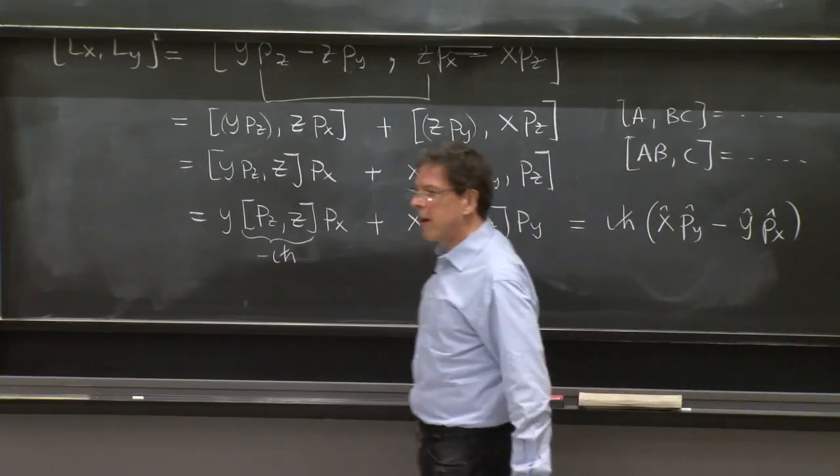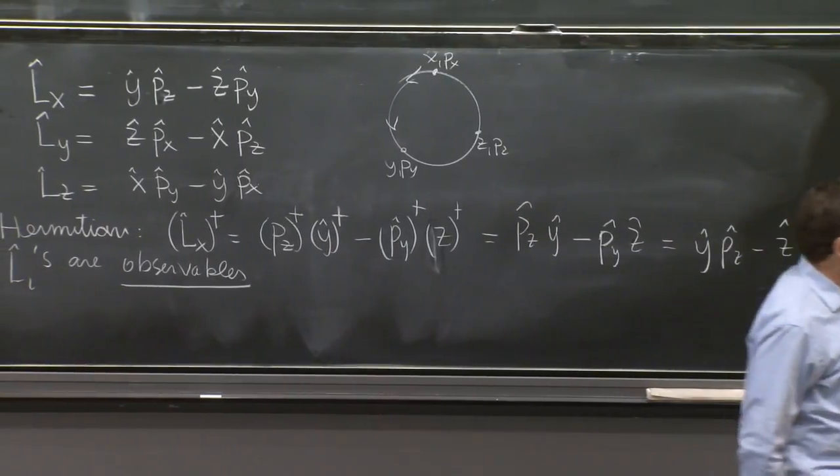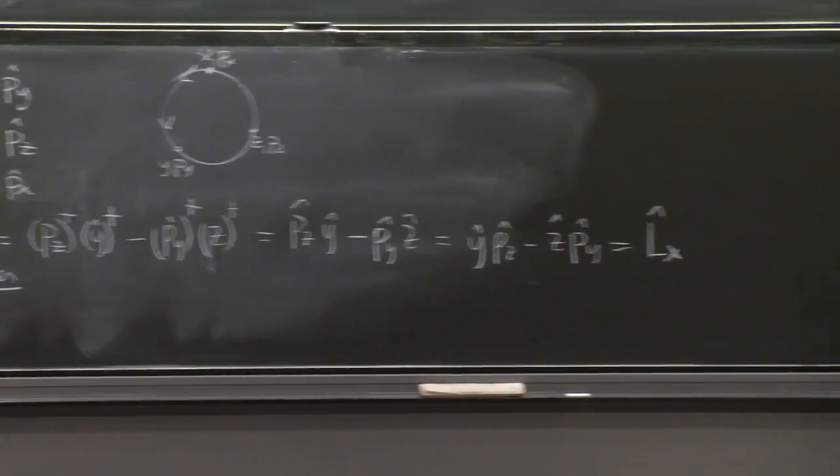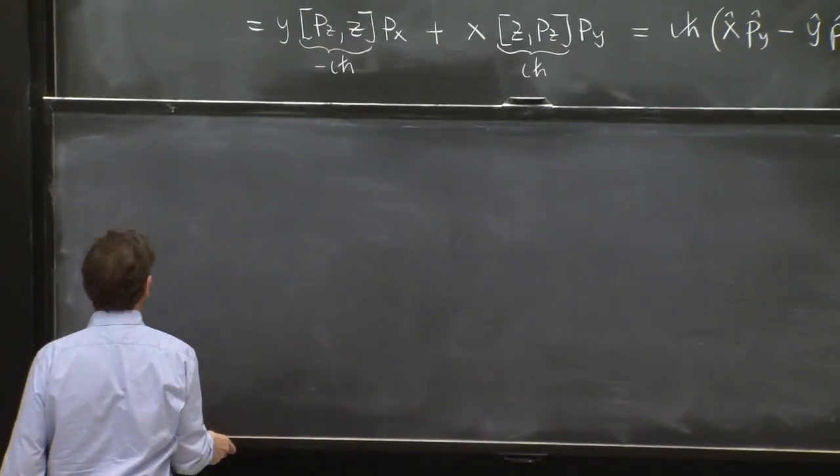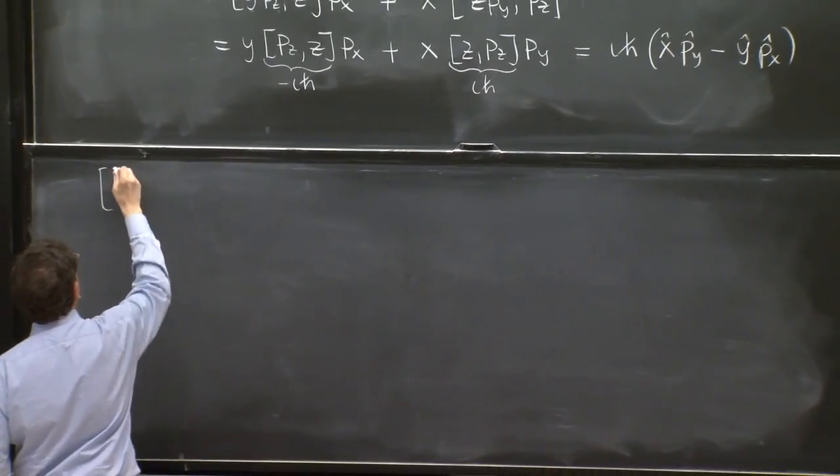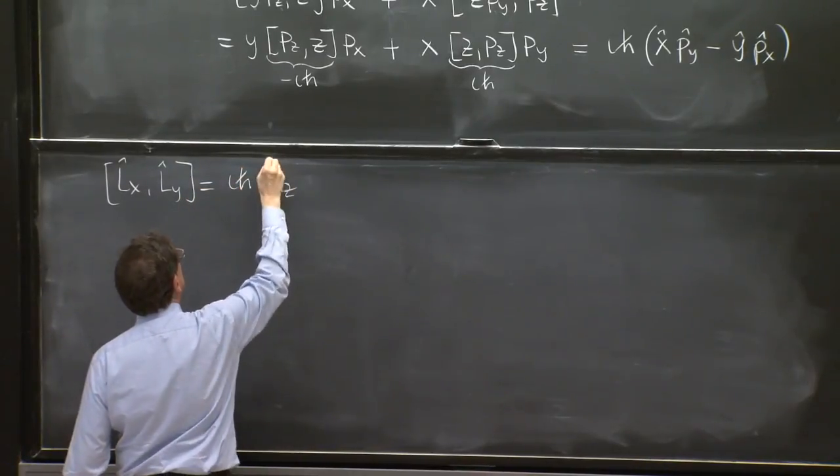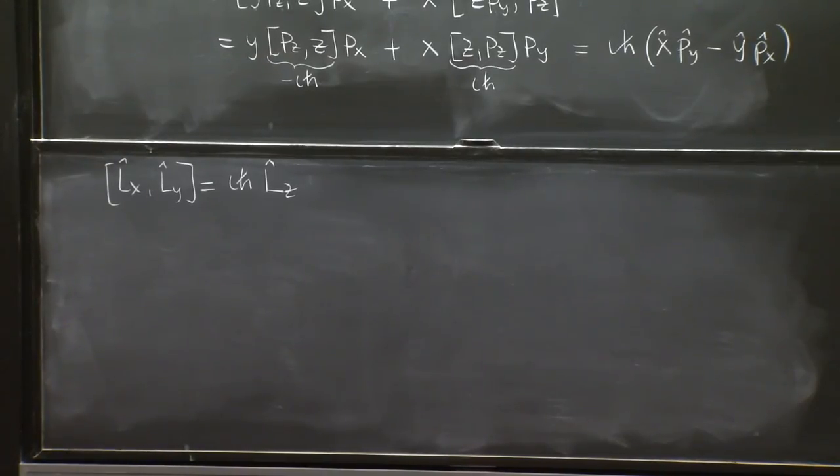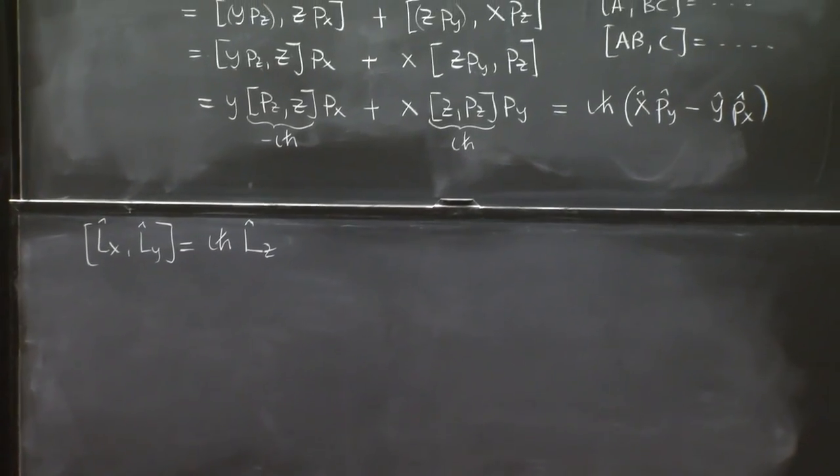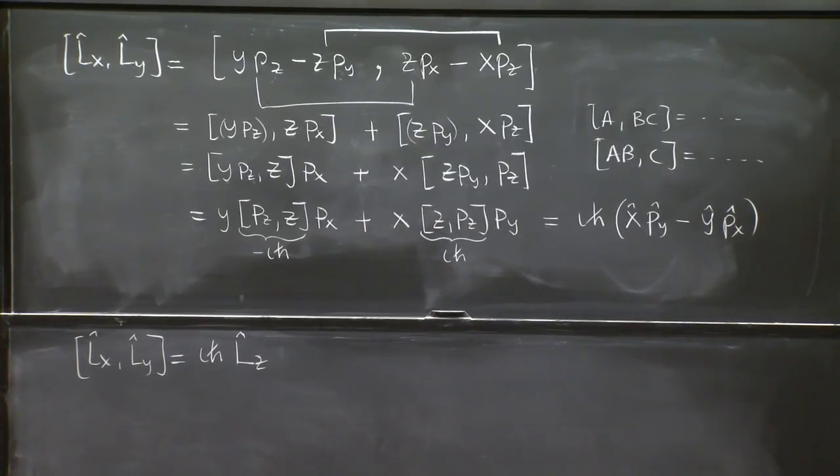See, everything came out in the right position. And you recognize that operator as lz. So this commutator has given you Lx with Ly equal i h bar Lz. It's a very interesting and fascinating property that somehow you were doing this commutation. It could have been a mess. But it combined to give you another angular momentum operator.